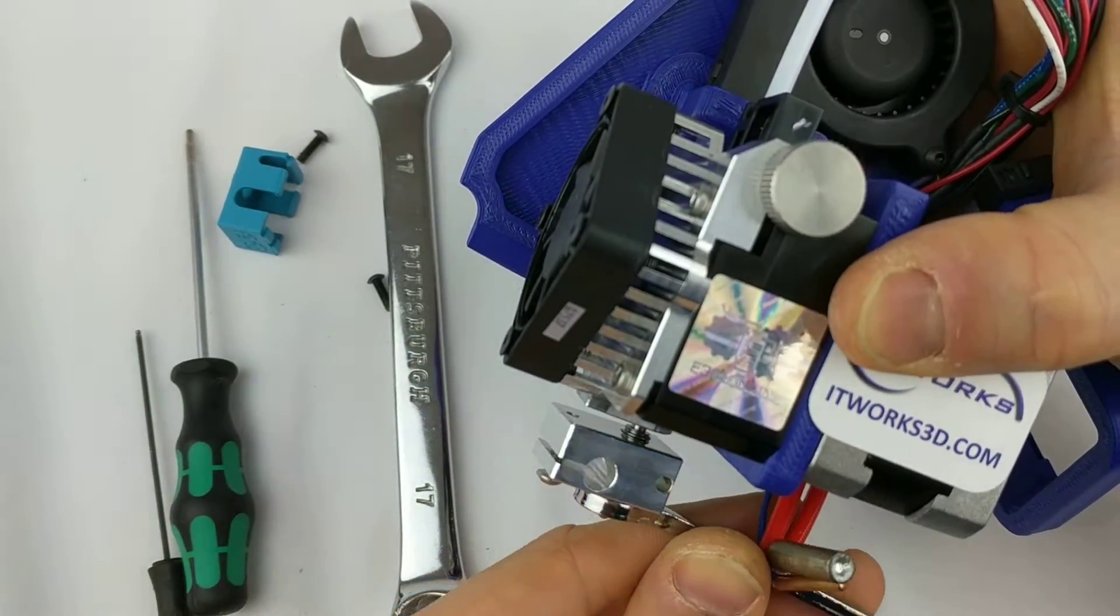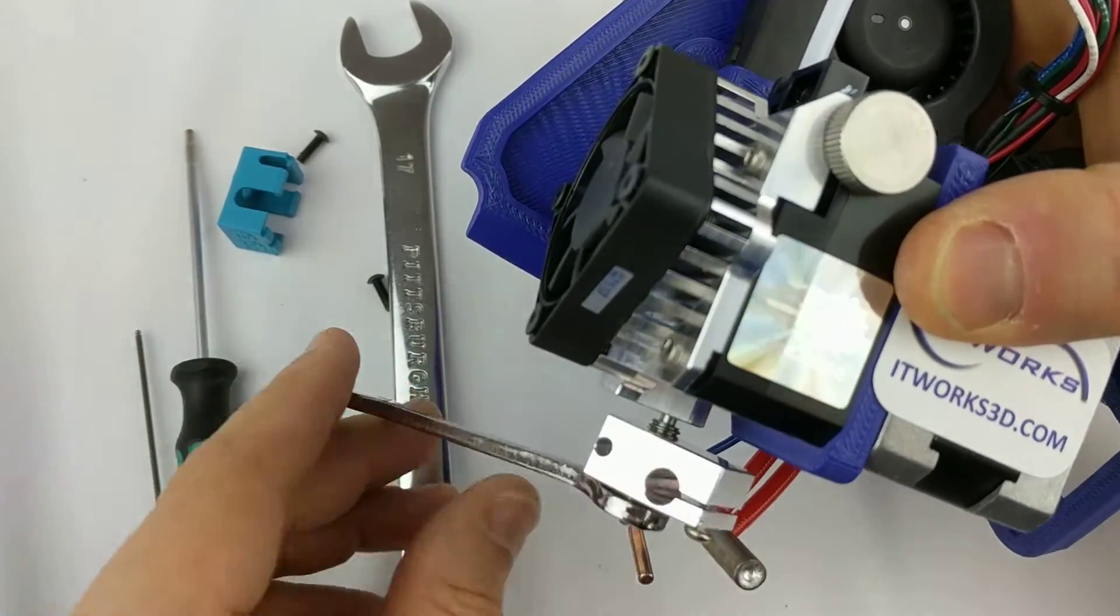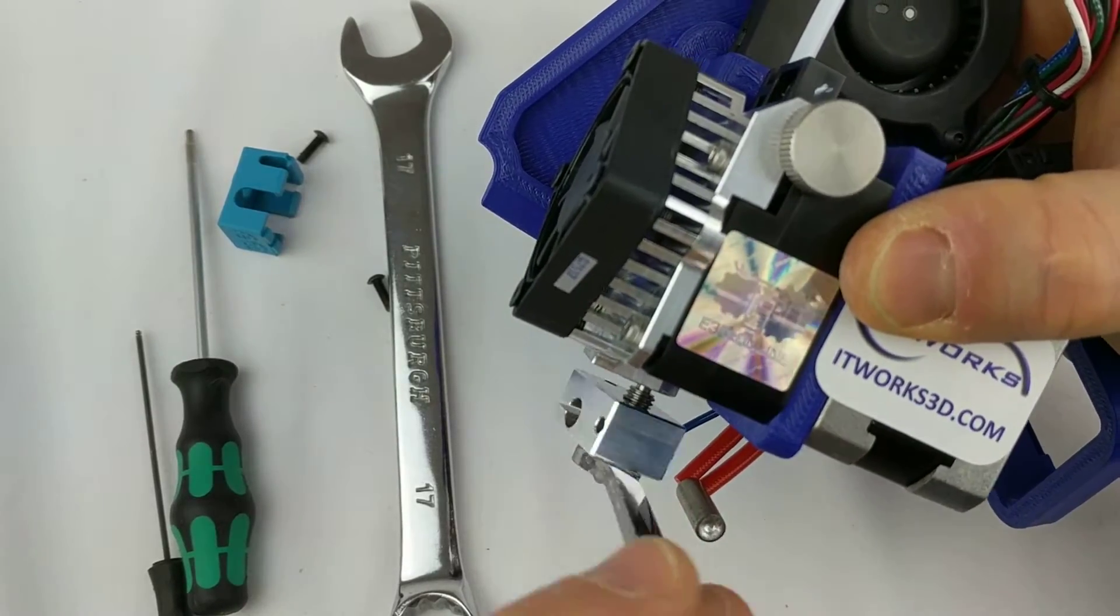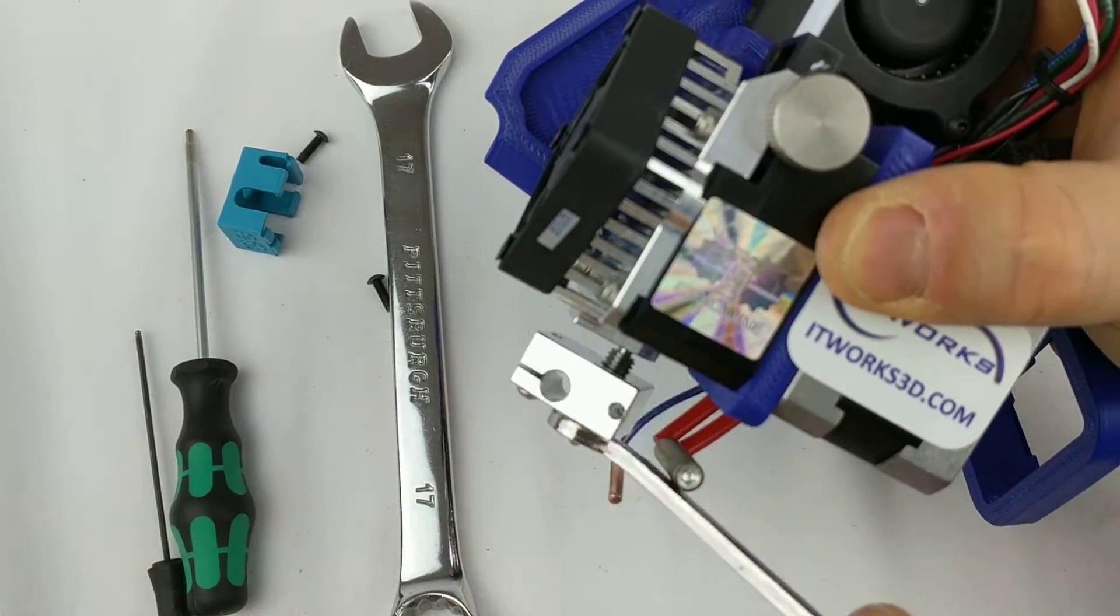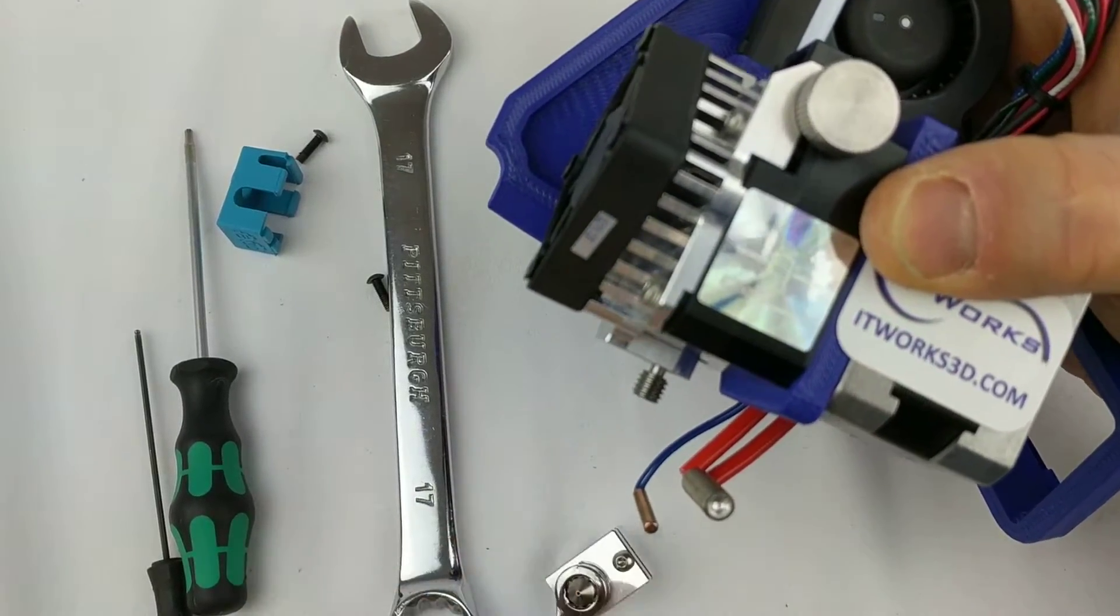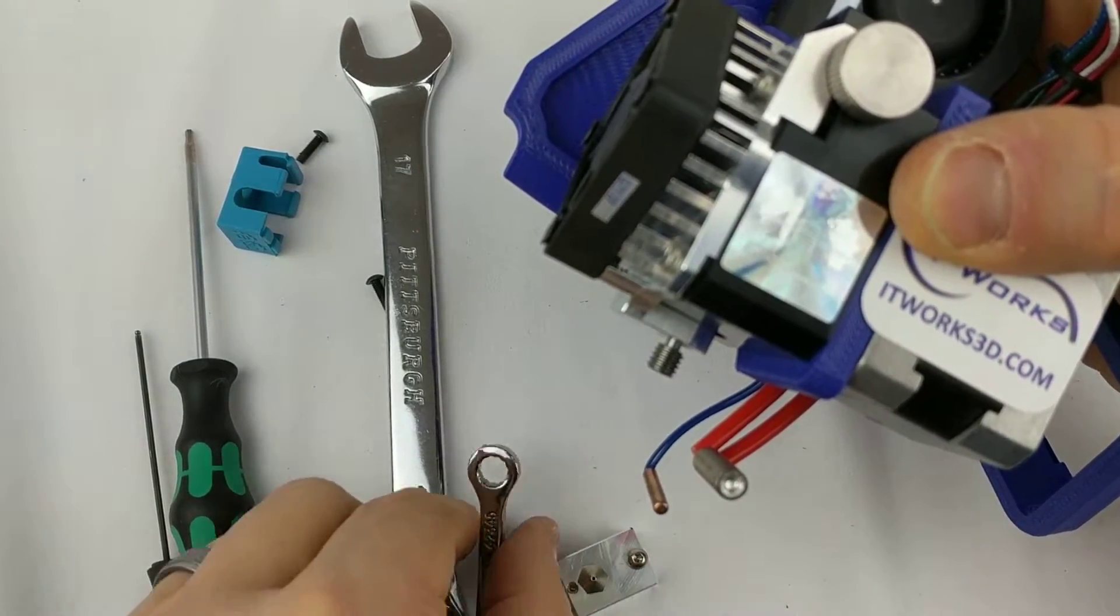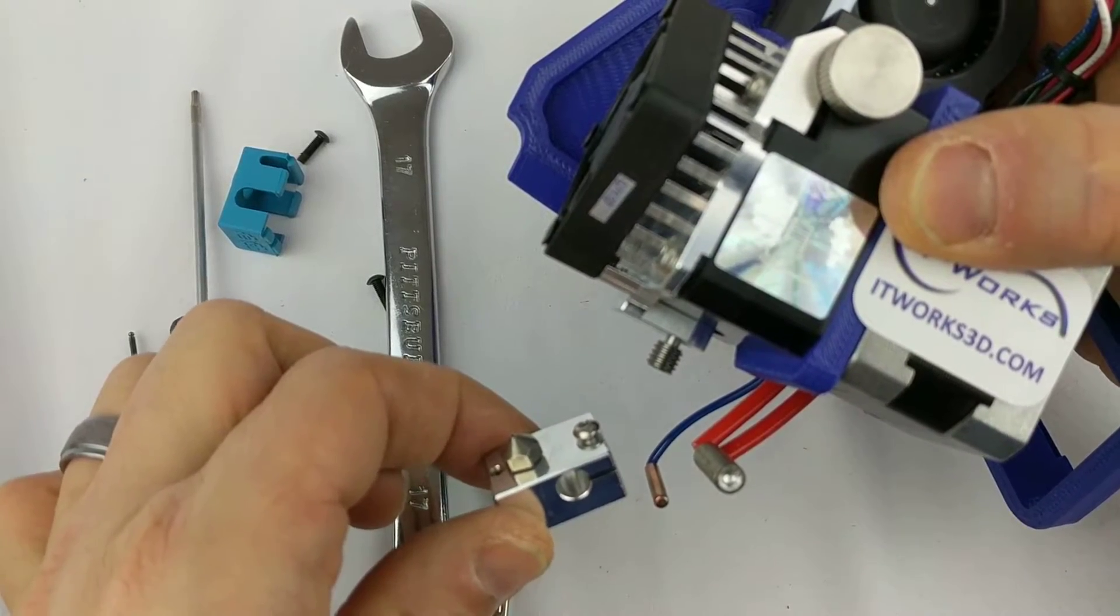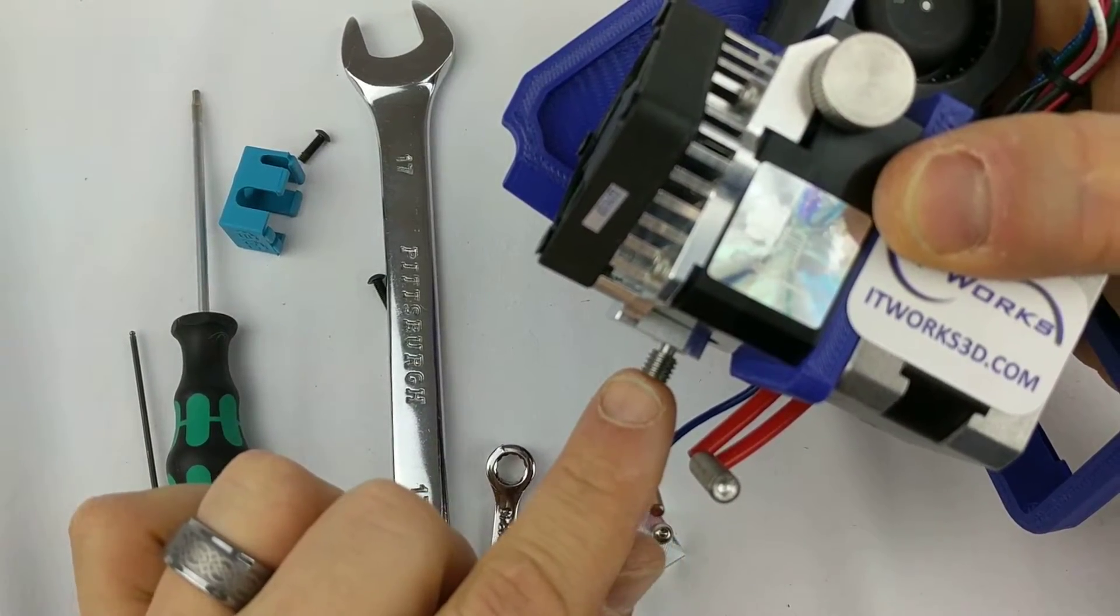And what's usually going to happen is the heat break, heater, or the heat break, block, and nozzle are all coming out together. In this case, I happen to have gotten the nozzle and block off together with the heat break remaining in there.